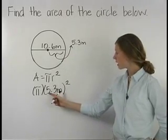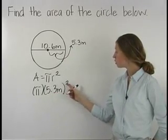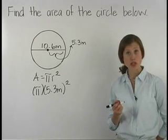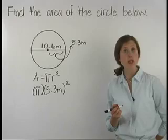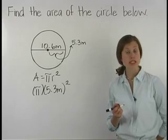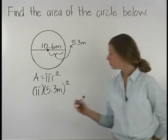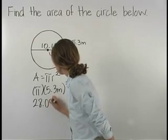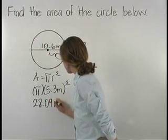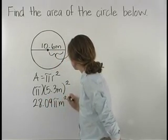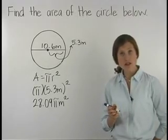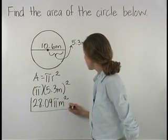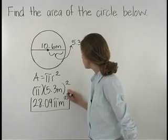Multiplying, 5.3 meters squared is equal to 5.3 meters times 5.3 meters, or 28.09 meters squared. So we have 28.09 pi meters squared, and the area of the circle shown here is 28.09 pi meters squared.